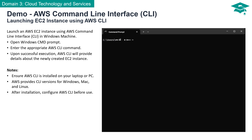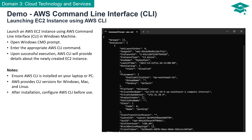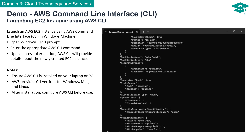Instead of the AWS Management Console, we can launch an AWS EC2 instance using the AWS Command Line Interface. Simply enter the appropriate AWS CLI command as illustrated here. Upon successful execution, AWS CLI will provide details about the newly created EC2 instance. Ensure AWS CLI is installed on your laptop or PC — it has versions for Windows, Mac, and Linux. After installation, configure AWS CLI before use.